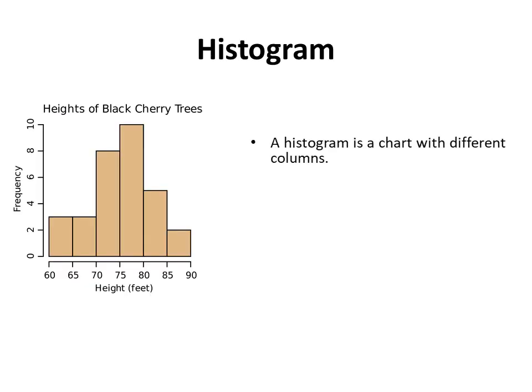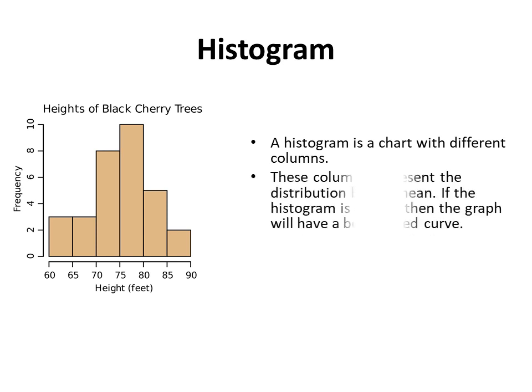The histogram. A histogram is a chart with different columns. These columns represent the distribution by domain. If the histogram is normal, then the graph will have a bell-shaped curve.